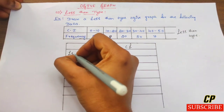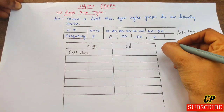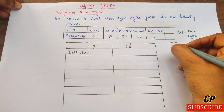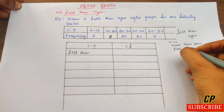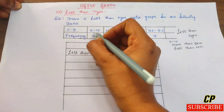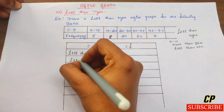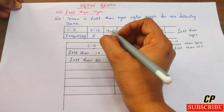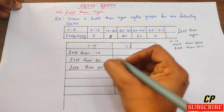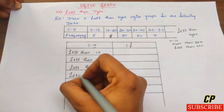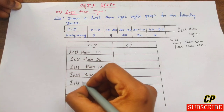For the less than type, the first interval 0 to 10 is less than 10. Next, 10 to 20 is less than 20. Then 20 to 30 is less than 30. Next, 30 to 40 is less than 40. And 40 to 50 is less than 50.